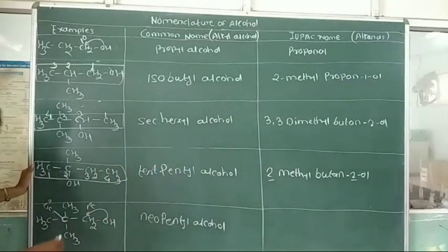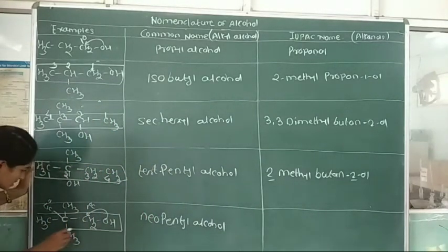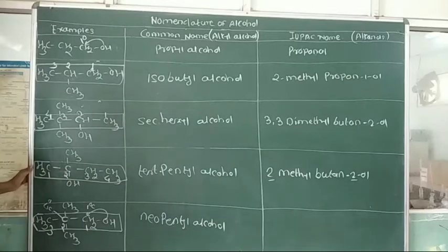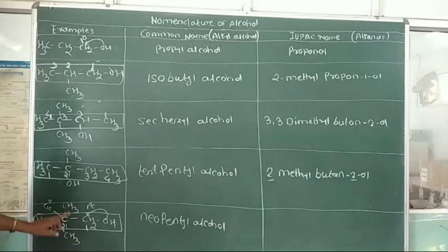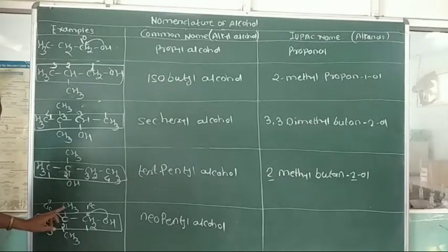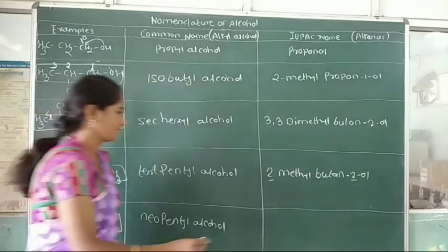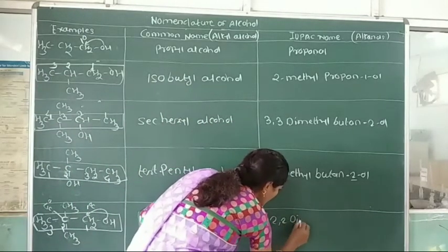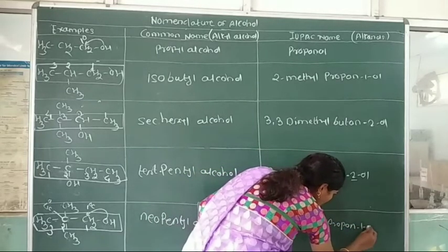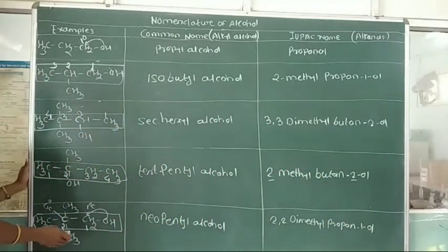In the IUPAC system, select the longest continuous chain and number it 1, 2, 3. Two methyl groups are attached to the second carbon atom. Therefore the name is 2,2-dimethyl, with 3 carbon atoms in the selected chain — propane — and the hydroxy group at carbon 1. The IUPAC name is 2,2-dimethylpropan-1-ol.